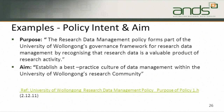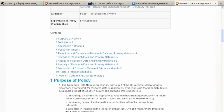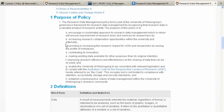Examples of policy. The first thing that any policy does is state its purpose and aim. This example from the University of Wollongong states that this policy forms part of the institution's governance for research data management by recognising that data is a valuable product of research, and its aim is to establish a best practice culture of data management within the institution. If we look at the actual reference, the purpose of the policy is much longer — it talks about assisting with making existing data available for purposes. It's a very comprehensive statement of the purpose of the policy.